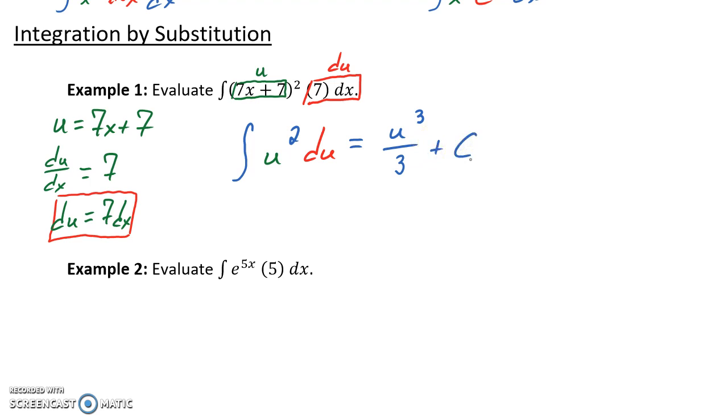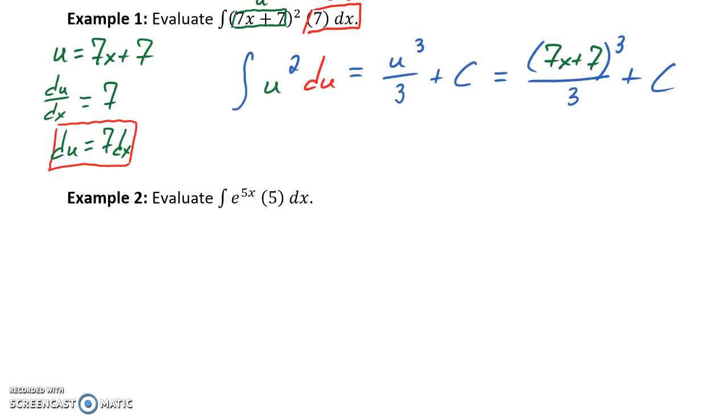And then our very last step will just be to replace anywhere we have a u showing up in our final result with that statement that we substituted in initially. So rather than having u cubed, we'll have (7x plus 7) cubed over 3 plus some quantity c, to represent that infinite number of solutions for that indefinite integral.